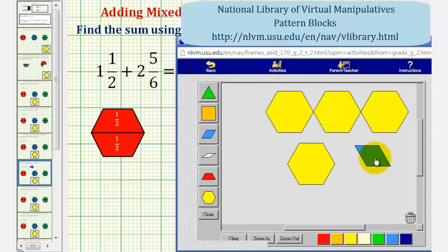Let's also express this as a fraction, more specifically, an improper fraction. Notice how we could express this only with blue pattern blocks, if we exchanged each yellow pattern block for three blue pattern blocks.